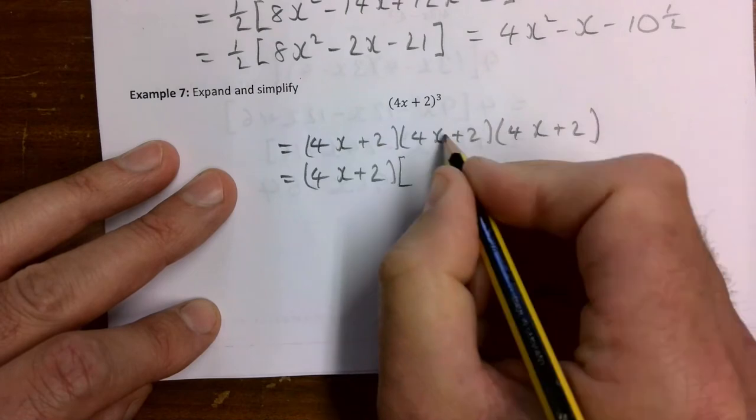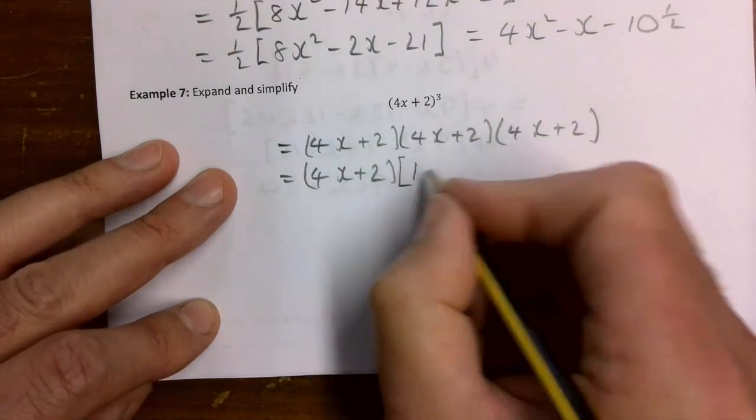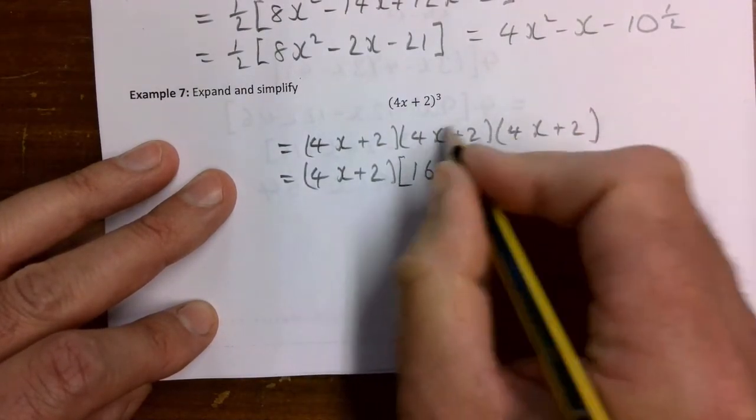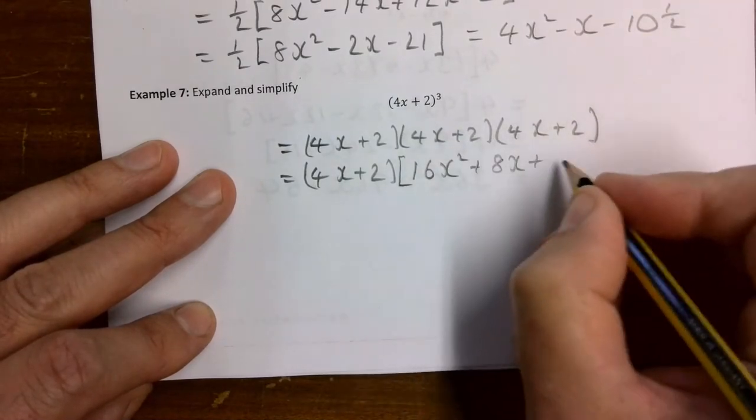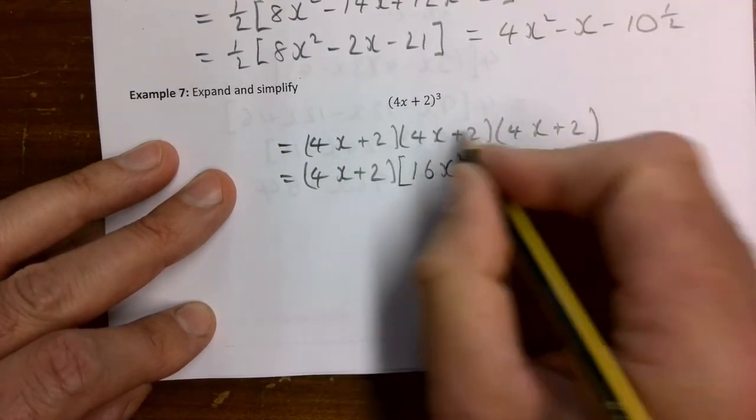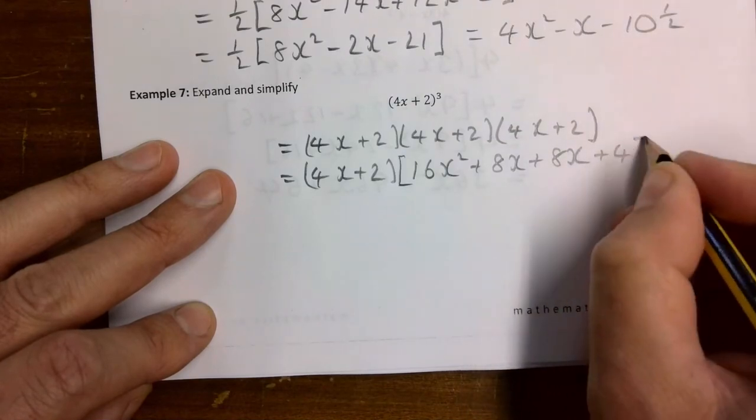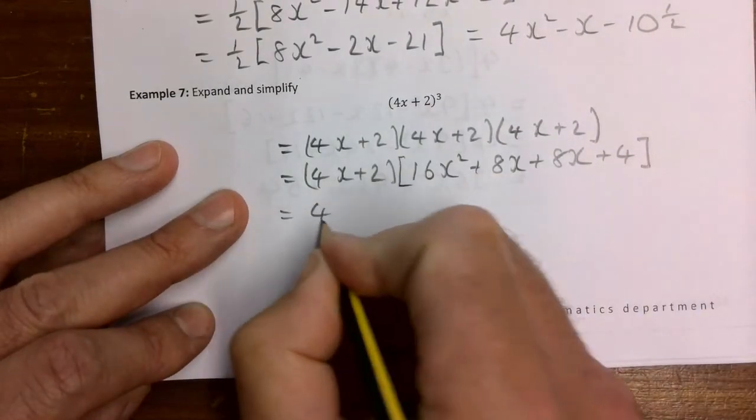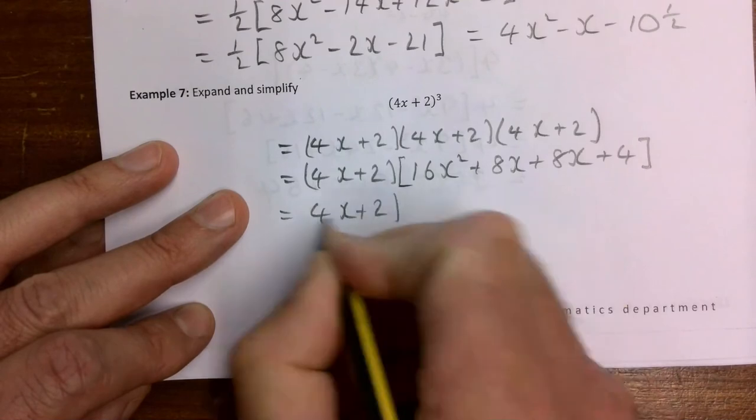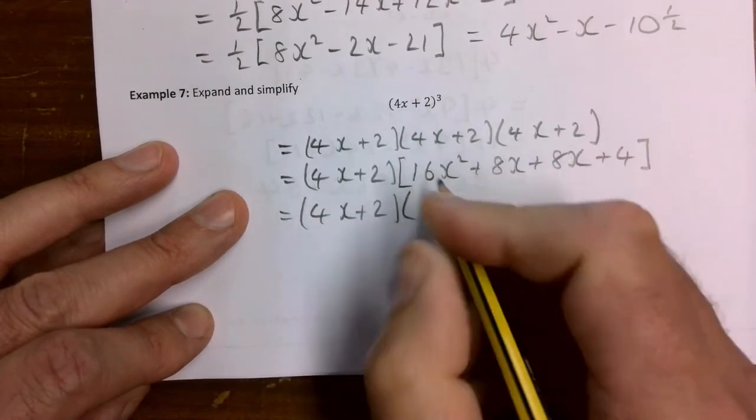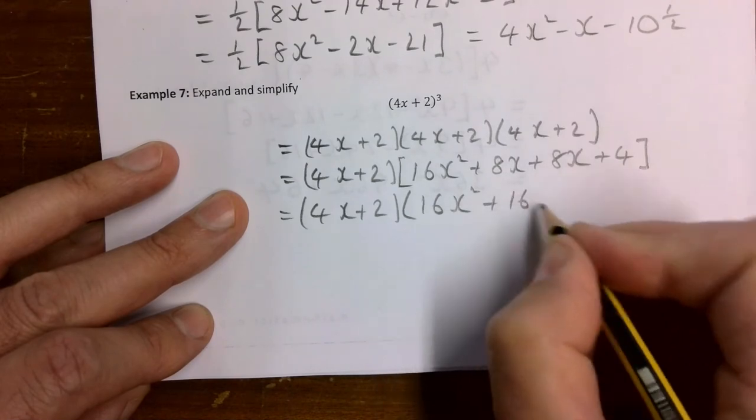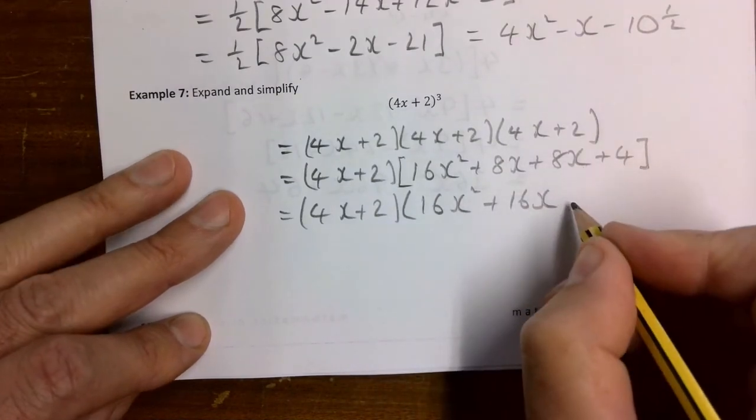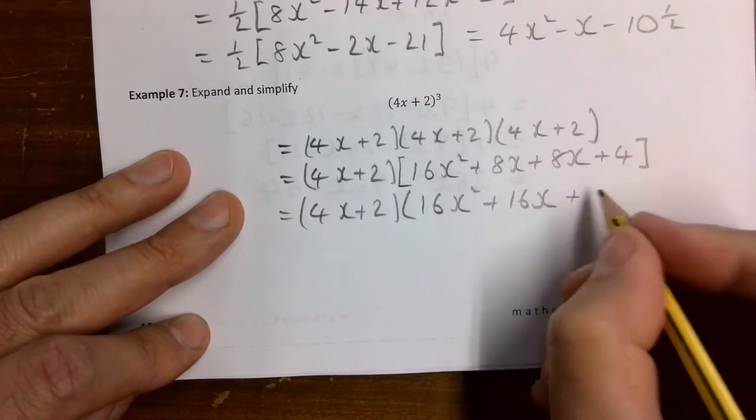Do FOIL for this bit here. 16x squared, outer plus 8x, inner plus 8x, and last plus 4. Times (4x plus 2). That's 16x squared plus 16x plus 4.